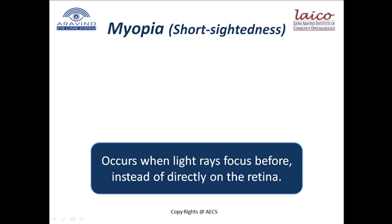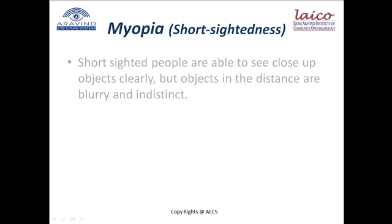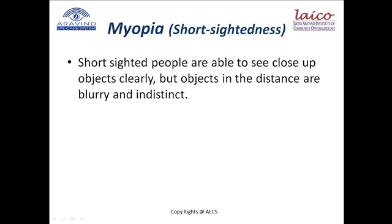Myopia occurs when light rays focus before, instead of directly on, the retina, as displayed in this model. Short sighted people are able to see close up objects clearly, but objects in the distance are blurry and indistinct. A person would see the same photo we saw in the beginning like this.